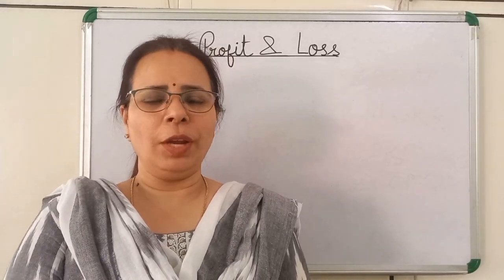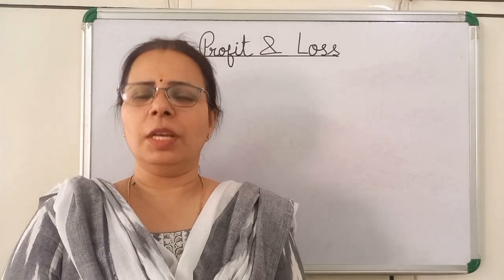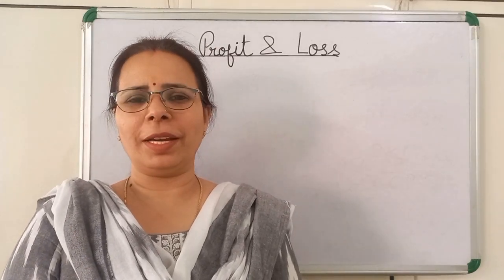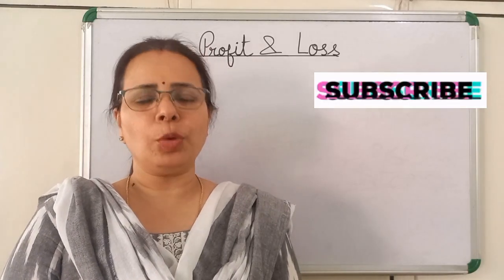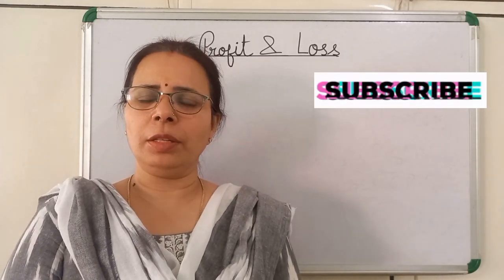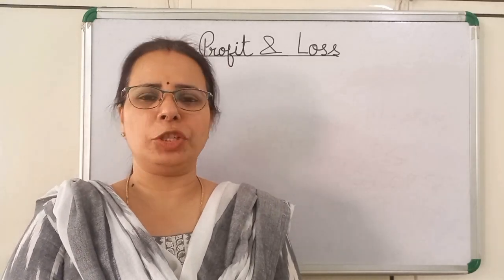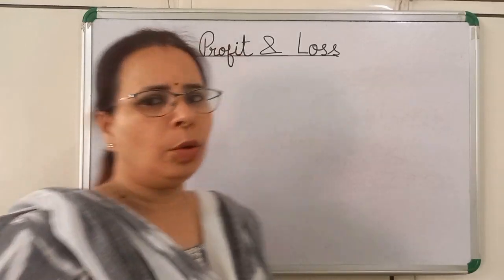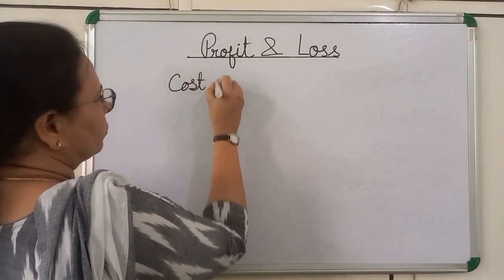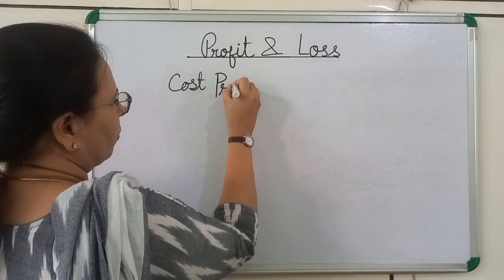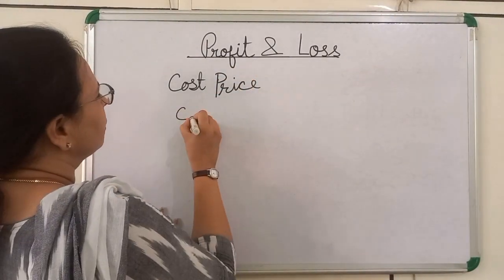Hello everyone. Today we are going to start a new topic: Profit and Loss. Suppose you went to the market to buy a toy. The shopkeeper also purchased the same toy from someone. The amount paid by the shopkeeper is called cost price. The short form of cost price is CP.